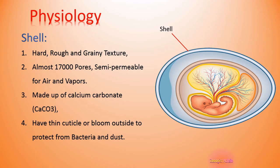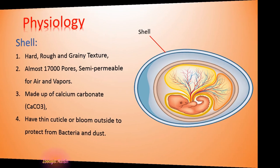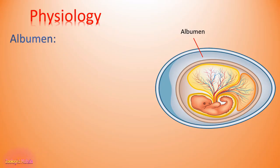The shell has a thin cuticle or bloom on the outside to protect from bacteria and dust. Cuticle and bloom are two different terms used in different books, but they can be used as synonyms. The next structure inside the shell is albumin, also called the white of an egg.